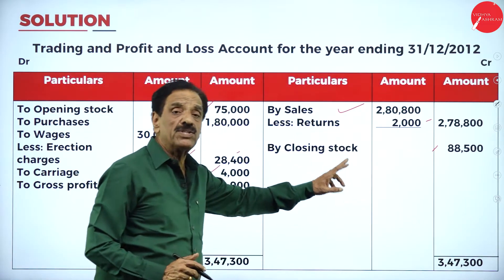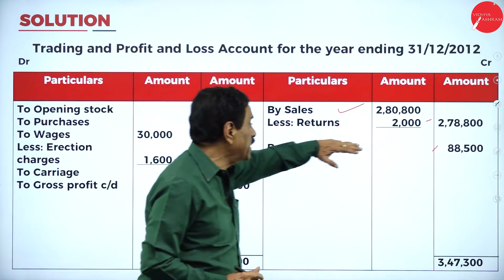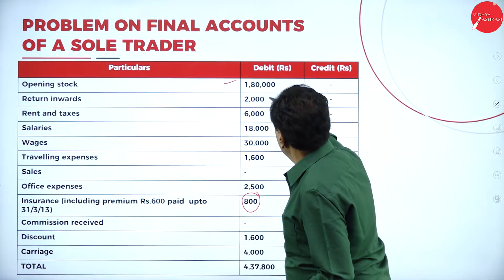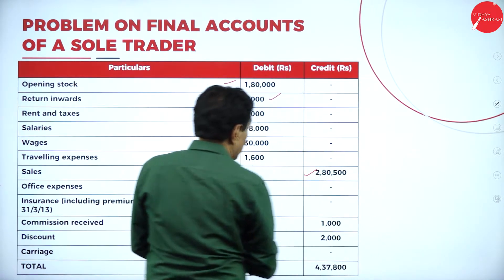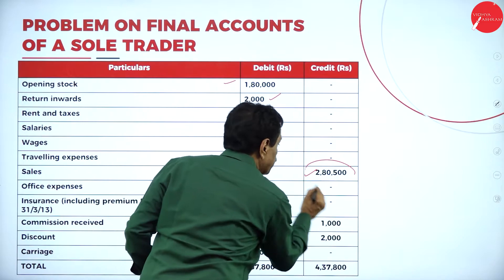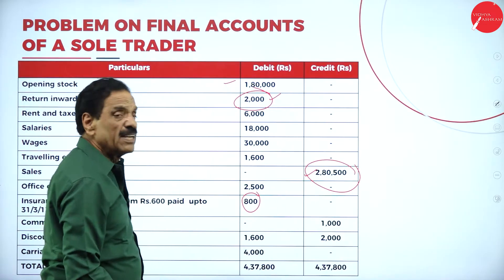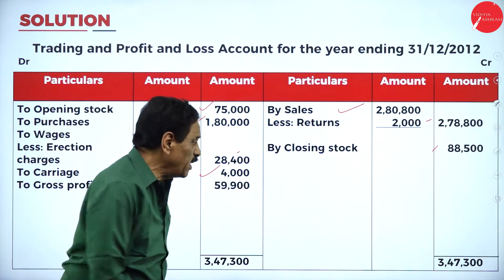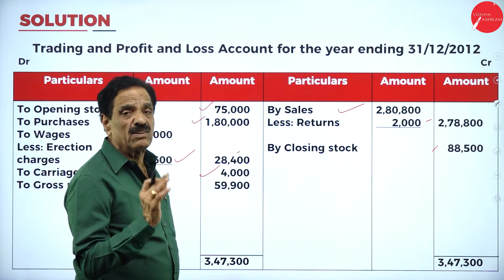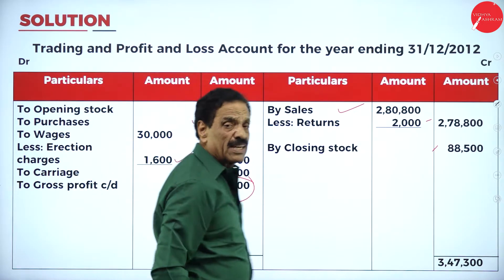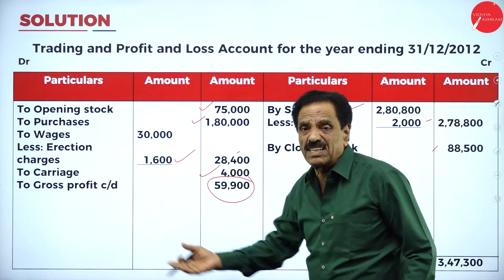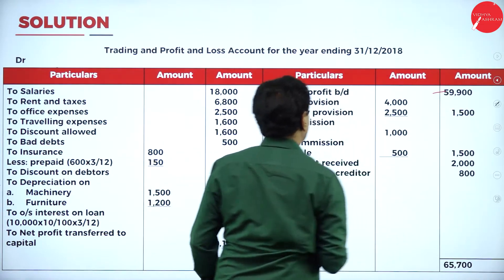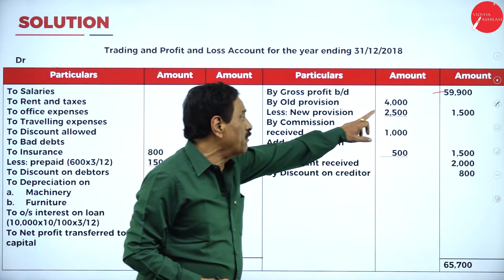The trading account totals: credit side — sales 2,78,800 and closing stock 88,500 — total 2,47,300 on the debit side. The gross profit transferred to the profit and loss account is 59,900. Then in the P&L account: by gross profit brought down 59,900. As per the problem, old provision is 4,000; new provision we calculated is 2,500. The difference — old 4,000 minus new 2,500 — gives a gain of 1,500 on the credit side.